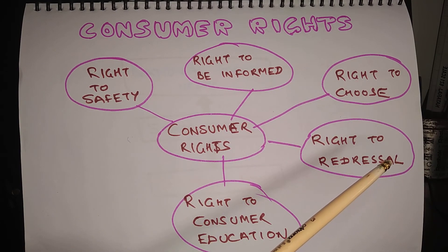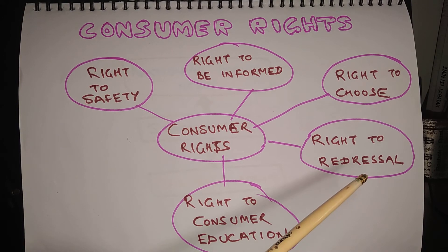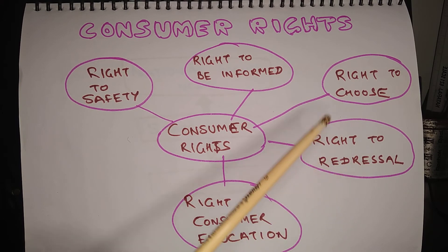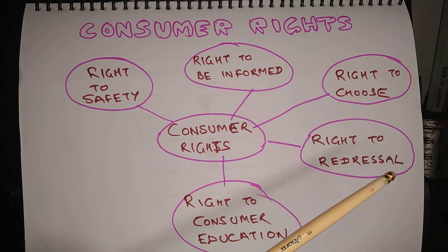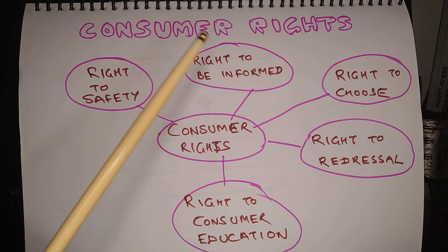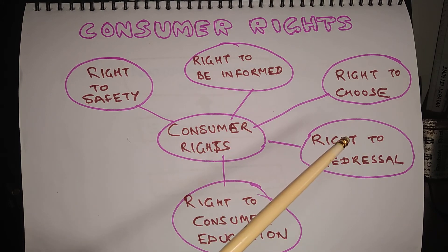You also have the right to choose. If you are going to buy a particular item and the shopkeeper offers you only one brand, then the shopkeeper is trying to deprive you of your right. The shopkeeper needs to offer you more than one brand so that you are free to choose among various options. If any problem arises regarding safety or user experience of the product, the consumer has the right to redressal and can go to the consumer forum to get their grievances addressed.